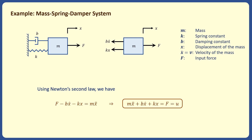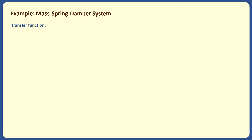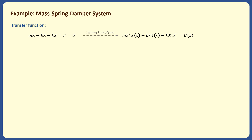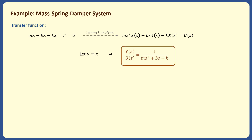We now want to represent the dynamical model of the system in the frequency domain. We assume the output of the system is the displacement x. By taking the Laplace transform from both sides of the ODE equation, assuming all initial conditions are zero, we can obtain the transfer function, which is the ratio of the output to the input and is equal to 1 over ms squared plus bs plus k. We learned in the linear control systems course that the stability of this system can be determined by the location of the poles of the transfer function.